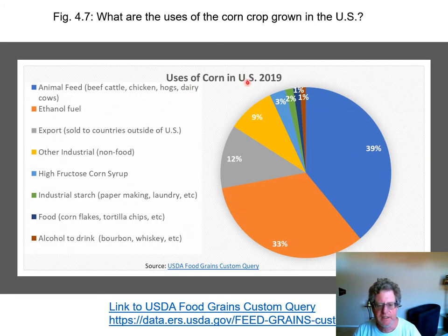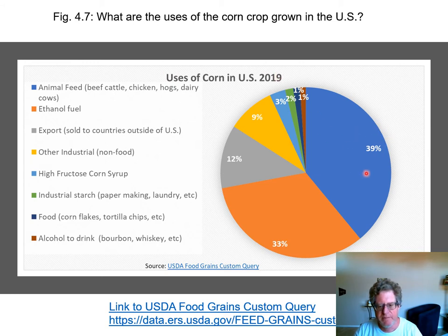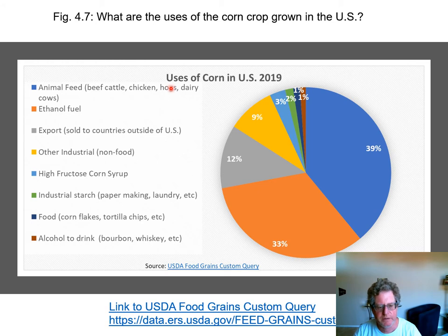Corn has the highest yield in the United States. This pie chart breaks down what corn is used for. The biggest use, 39 percent, is for animal feed. So if you're having a hamburger, the cow is likely eating corn. If you're having chicken or eggs, the chicken is likely eating corn. Pigs eat corn. If you're drinking milk or eating cheese, they were likely fed corn.